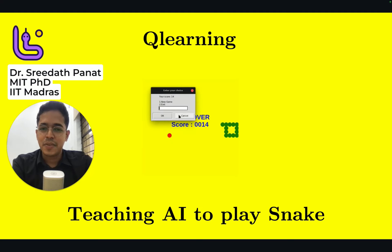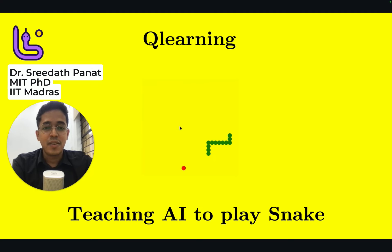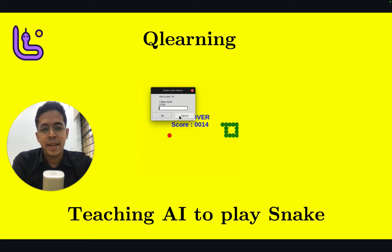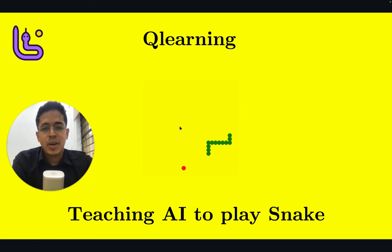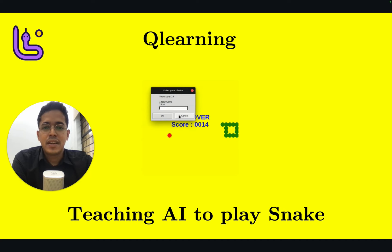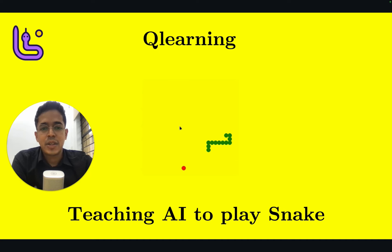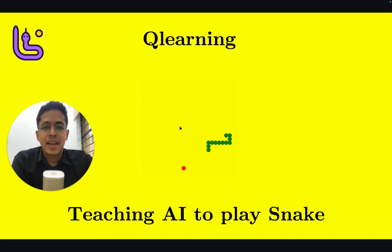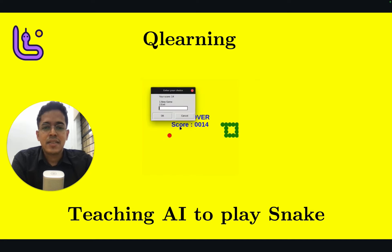Hi, welcome to this video on Q-Learning. We'll be teaching an AI algorithm to learn how to play the snake game. It will be very similar to how a child learns how to play this game. Q-Learning is within reinforcement learning and Q stands for quality. My name is Dr. Sridhar Panath. I am a PhD from MIT and this lecture will initially cover the theoretical aspects of Q-Learning, followed by implementing it in code.